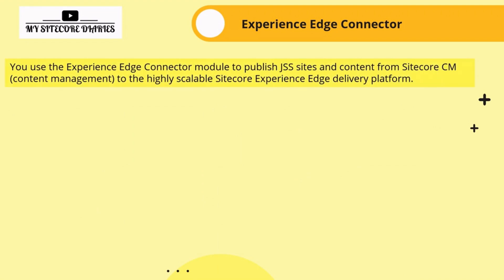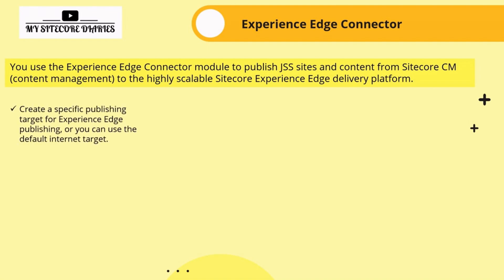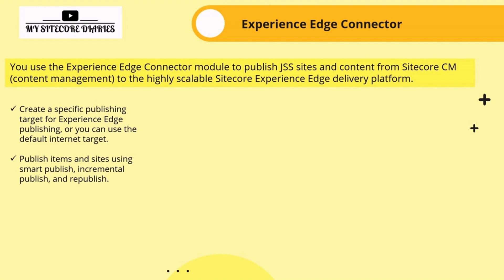The Experience Edge Connector is a module used to publish JSS sites and content from the Sitecore CM (Content Management) to the highly scalable Experience Edge delivery platform. It creates a specific publishing target for Experience Edge. You can also use the default internet target. Publishing items and sites can be done using Smart Publish, Incremental Publish, and Republish — all publishing mechanisms can be used to publish content from Sitecore CM to Experience Edge via the Experience Edge Connector.